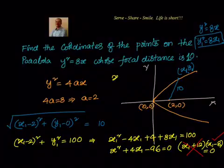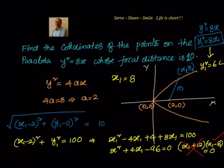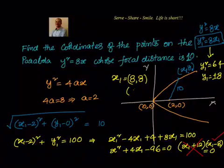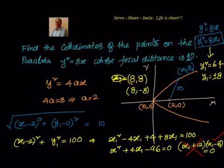Since x1 = 8 and y1² = 8x1, we substitute to get y1² = 8 × 8 = 64, so y1 = ±8. Therefore there are two points: (8, 8) and (8, −8), which satisfy the given condition.